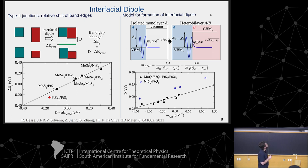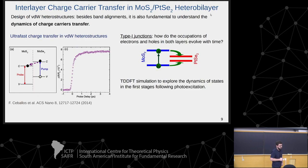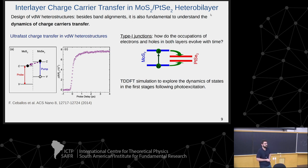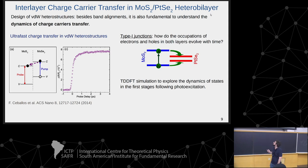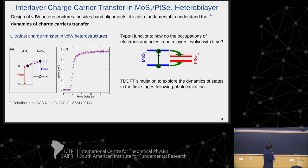The nickel and platinum heterojunction results deviate more from the trend, likely because hybridization is stronger in that case, leading to charge accumulation on the nickel sulfide layer. Having described the static electronic structure of heterojunction formation, we now turn to understanding the dynamics of charge carriers in these heterojunctions. We selected the molybdenum disulfide and platinum diselenide heterobilayer to study charge carrier dynamics, motivated by experimental findings of ultrafast charge carrier transfer in these heterobilayers.